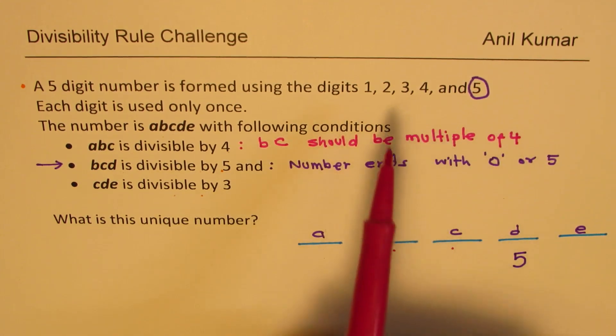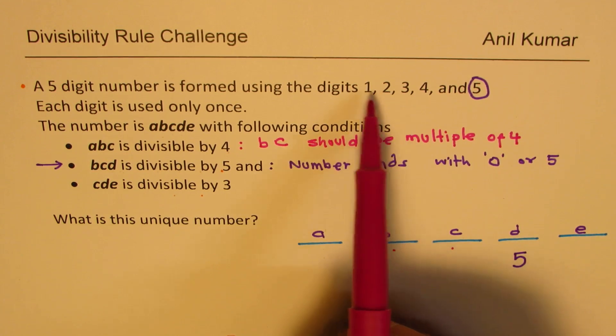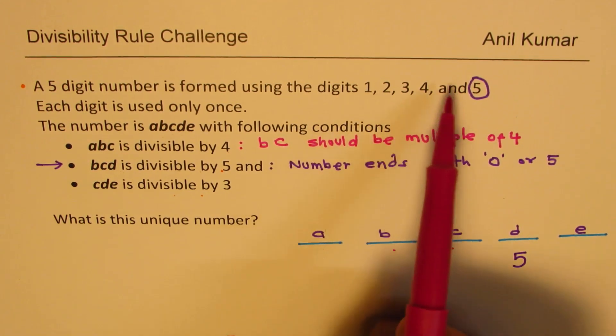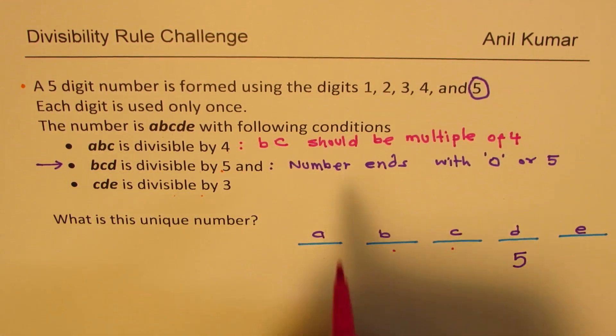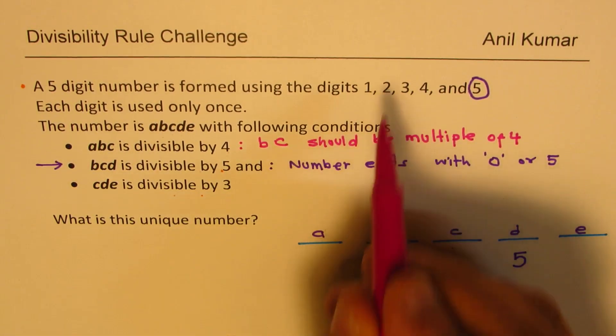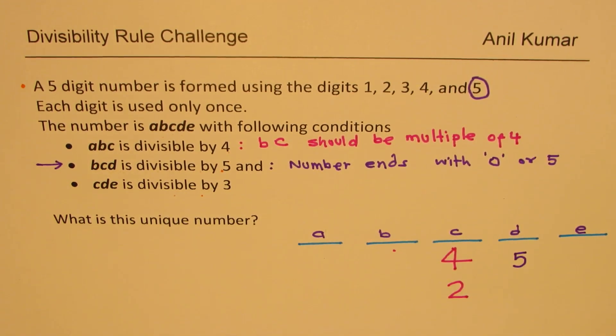That means this number could be 24, for example, 32 for example, 12 for example. In all these combinations, this could end with either 4 or with 2. So we have 2 options here. We will see which one best fits in the situation.